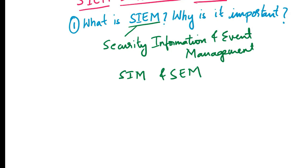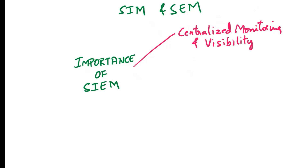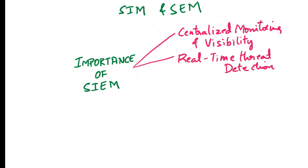The primary goal of SIEM is to help organizations detect and respond to security incidents more effectively by providing a centralized view of security-related events and activities. Now, why is SIEM important? First, centralized monitoring and visibility — SIEM collects and aggregates data from servers, network devices, applications, and endpoints, allowing security teams to monitor the entire IT environment from a single location to detect anomalies and threats more efficiently. Second, real-time threat detection — SIEM analyzes incoming event data in real-time, identifying suspicious activities by correlating events from different sources to detect complex attack scenarios.